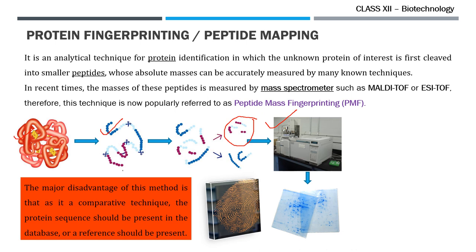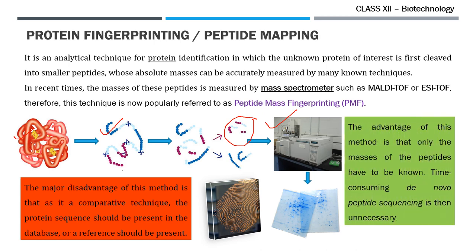The major disadvantage of this method is that it is a comparative technique. We basically need a protein sequence in the database, or we would require a reference in our experiment. But the advantage of this method is that only the masses of the peptides have to be known — the time-consuming de novo peptide sequencing is not necessary.